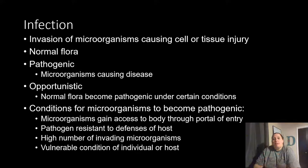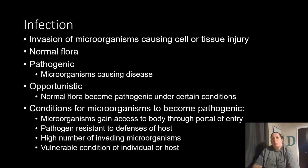What are some conditions microorganisms need in order to become pathogenic? First, they have to gain access to your body through some type of portal of entry — through your respiratory system, digestive system, or breaking through the skin. The pathogen also has to resist your body's defenses, evading your first, second, and third lines of defense enough to make you sick.